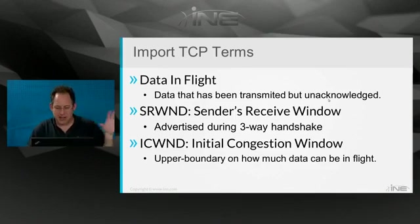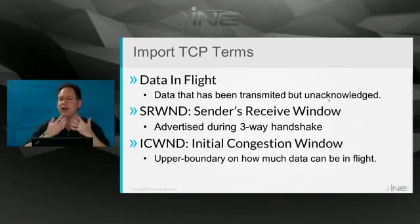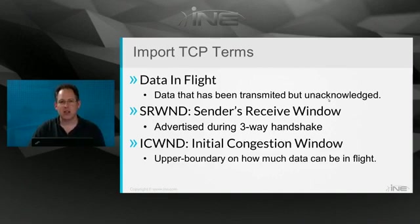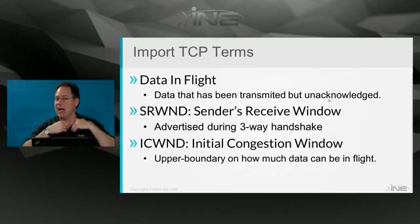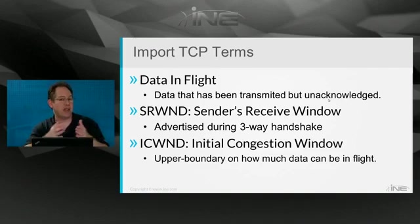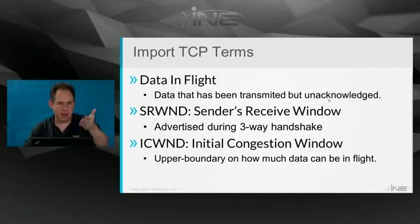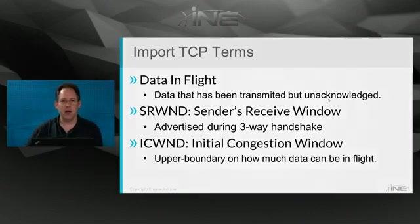In the next video, we're going to start by talking about the TCP slow start algorithm, which is one of two algorithms TCP uses to govern how much data it can send right now and whether it's allowed to send more the next time around.